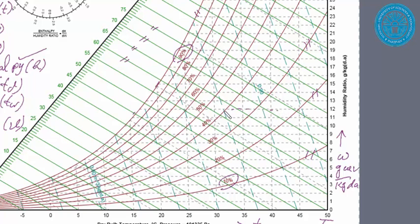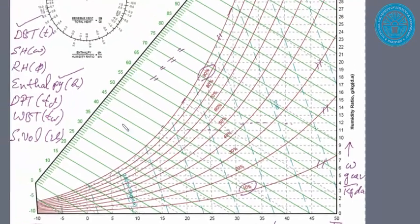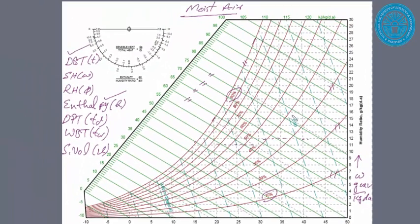Wet bulb temperature lines are here, again dotted lines. These are constant wet bulb temperature lines, almost parallel to the enthalpy lines.